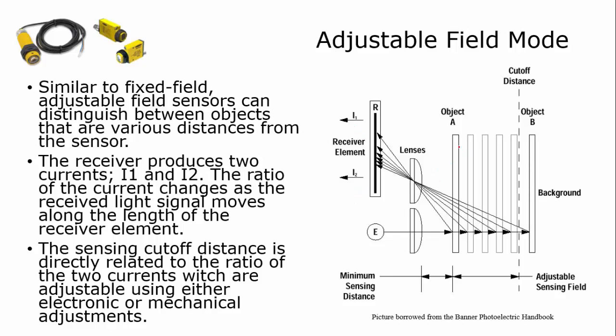As the object is moving in this depth of field, as the light strikes and comes back at different spots along this receiver depending on where it is in the field, I get a different current reading out here.